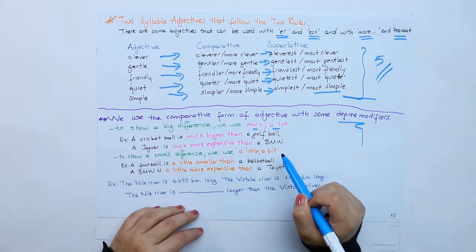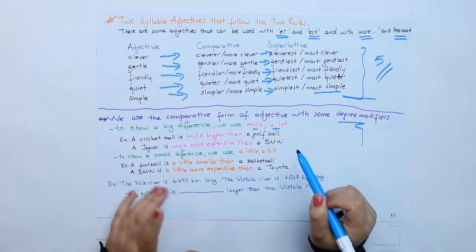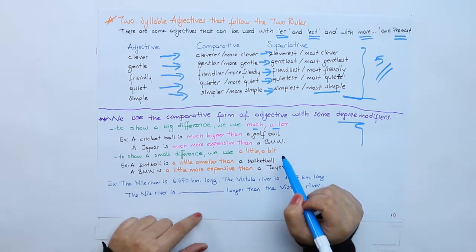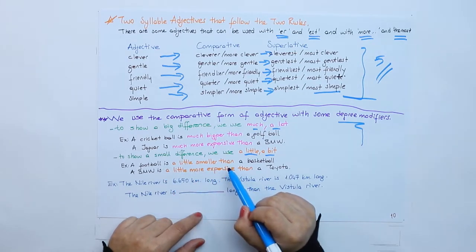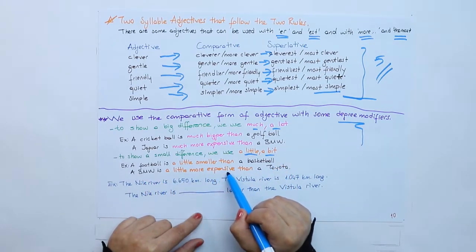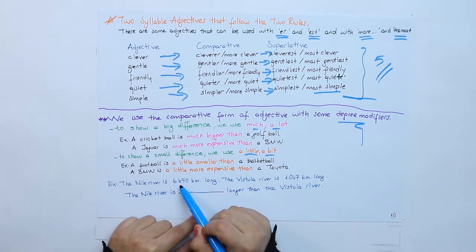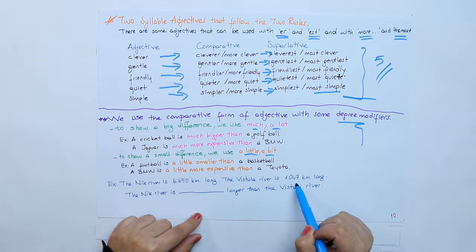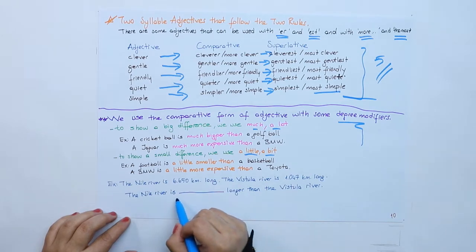A Jaguar is much more expensive than a BMW. To show a small difference we use A LITTLE or A BIT. A football is a little smaller than a basketball. A BMW is a little more expensive than a Toyota. The Nile River is much longer than the Volga River.